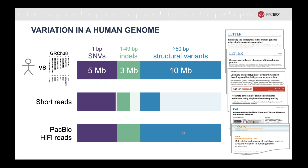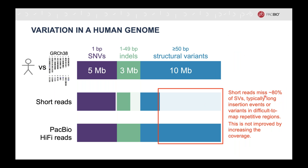Many studies have shown that when we compare an individual's genome to their reference, we find around 5 million single nucleotide variants, around 3 megabases of indels shorter than 50 base pairs, and around 10 megabases of structural variants larger than 50 base pairs. Short reads miss about 80% of structural variants, typically long insertion events or variants that are difficult to map in repetitive regions, and this isn't really improved by coverage.